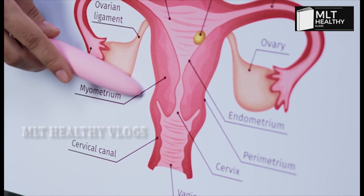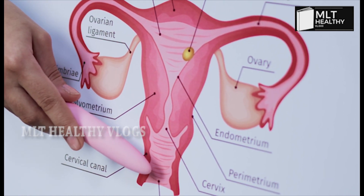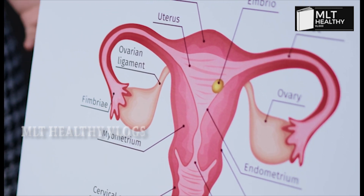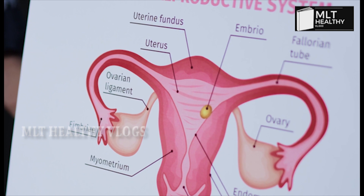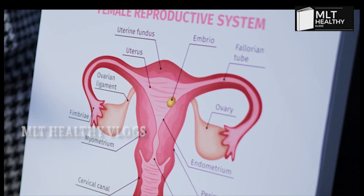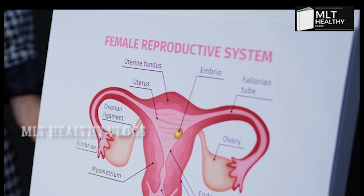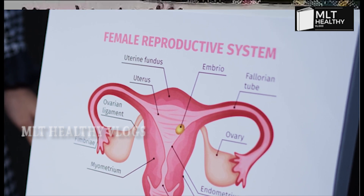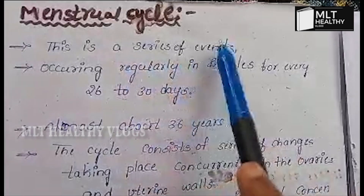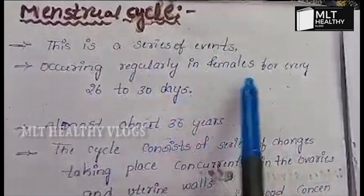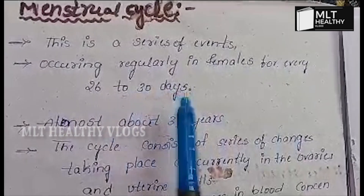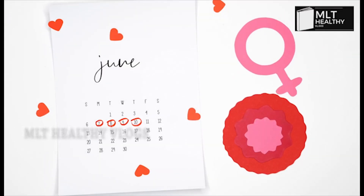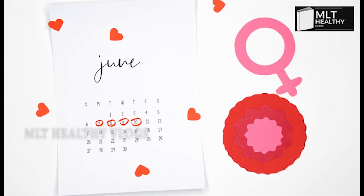The main topic is the Menstrual Cycle. This is a series of events occurring regularly in females every 26 to 30 days. The menstrual cycle is regular, lasting almost about 36 years overall.